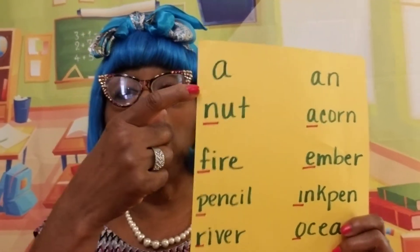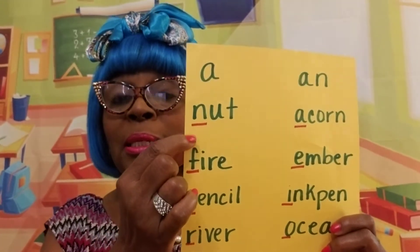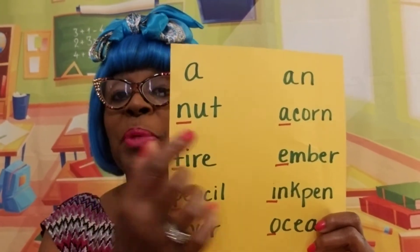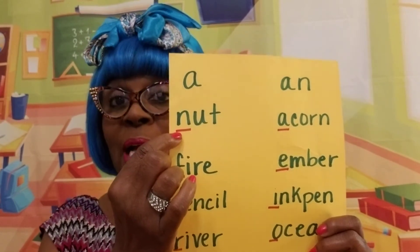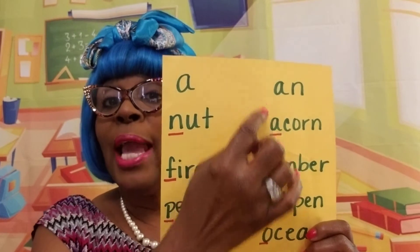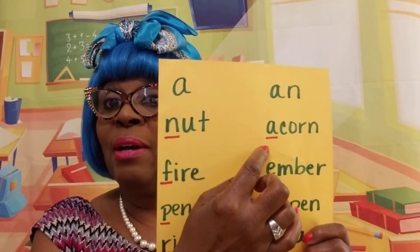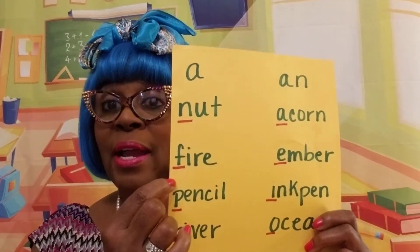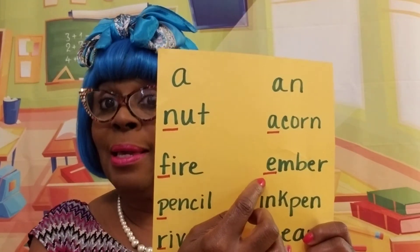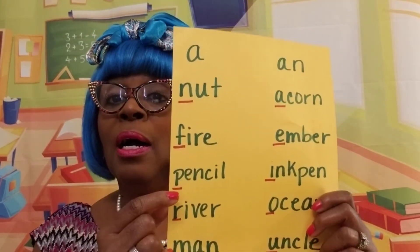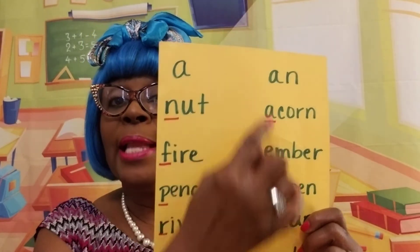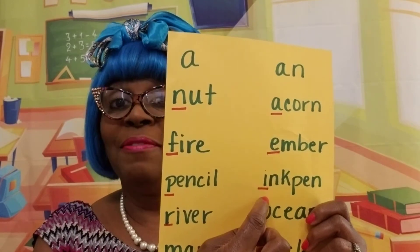So we would say a nut because N is a consonant — the nut begins with the letter N, which is a consonant — and an acorn. You use an because acorn begins with a vowel. A fire — F is a consonant. An ember — E is a vowel. A pencil — P is a consonant. An ink pen — I is a vowel.